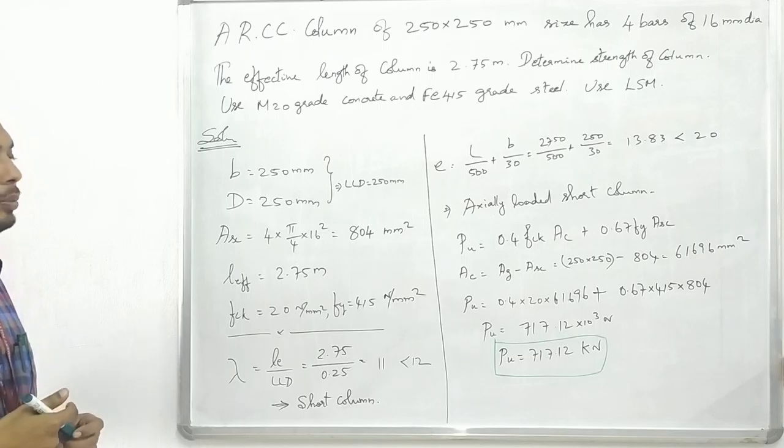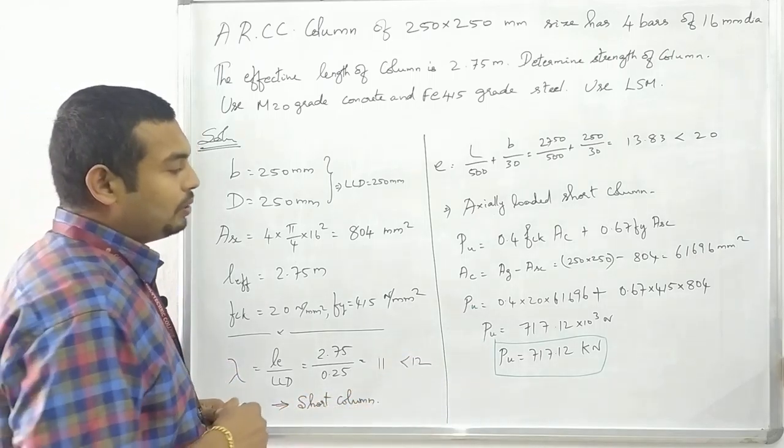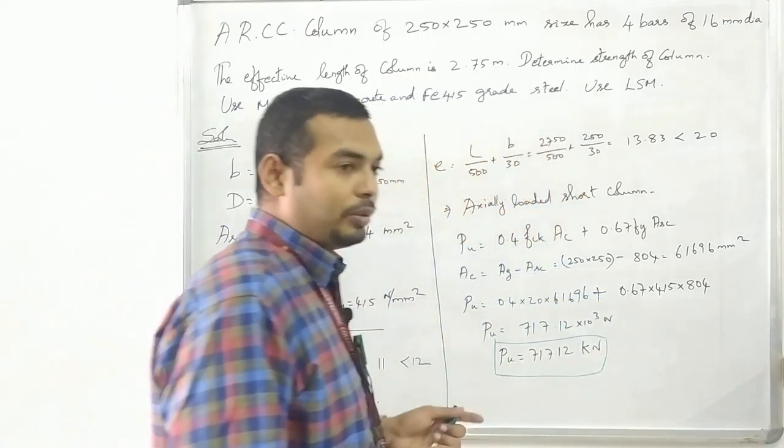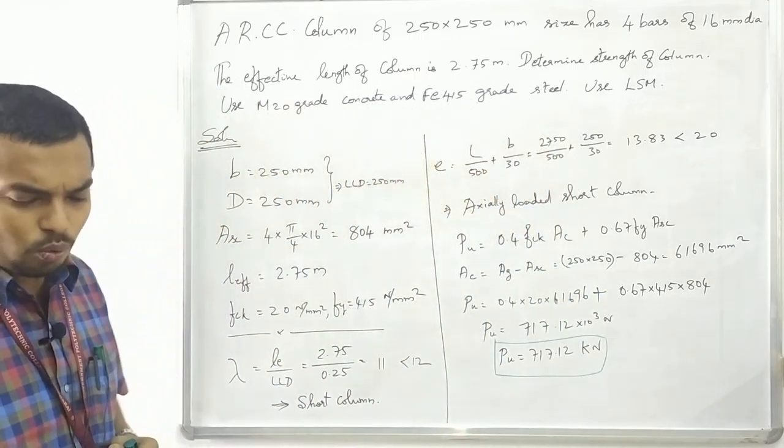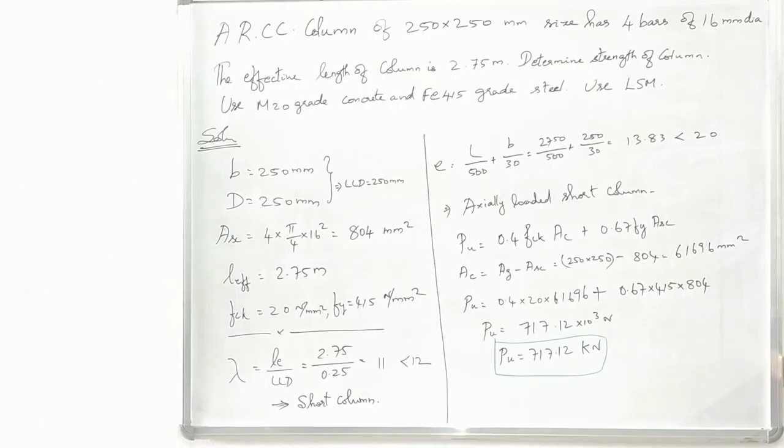Substituting all terms, the ultimate load is 717.1 × 10³ Newton, that is 717.12 kilonewton. This is the column ultimate load carrying capacity. The safe load or permissible load is the ultimate load divided by 1.5.